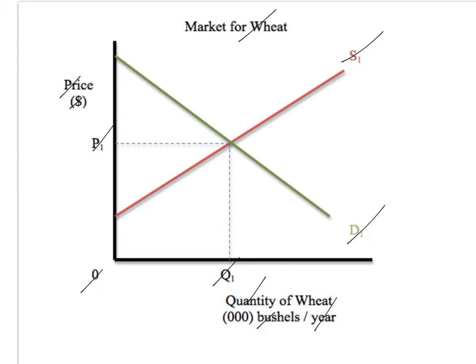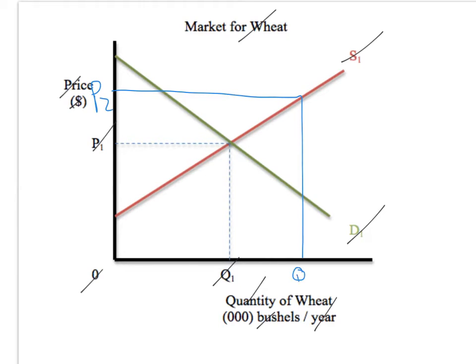So, the government's going to get involved. There's an equilibrium point — everybody wants to be at equilibrium. It's a floor, so it must be set above equilibrium. We'll put it in at P2, and it results in a quantity of Q2.